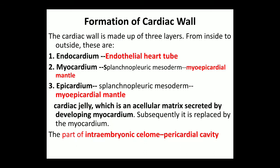Now, formation of the cardiac wall. There are three walls of the heart: endocardium, myocardium, and epicardium. Endocardium develops from the endothelial heart tube, and myocardium and epicardium both develop from the myoepicardial mantle. The myoepicardial mantle is formed by splanchnopleuric mesoderm.